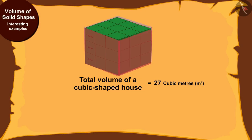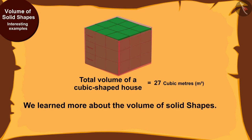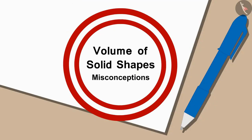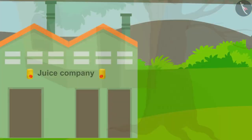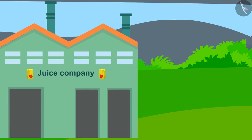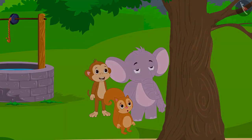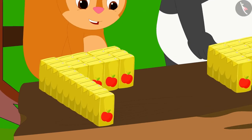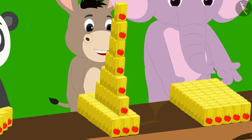Hello kids! In the previous video we learned more about volume of solid shapes. In this video we will see some of the misconceptions related to this. A new company has started production of juice in Champapur. This company has advertised that people of Champapur will have to make a unique shape using juice cartons. Whoever makes a shape having the highest volume will win the prize.